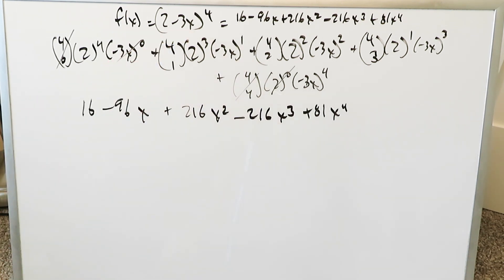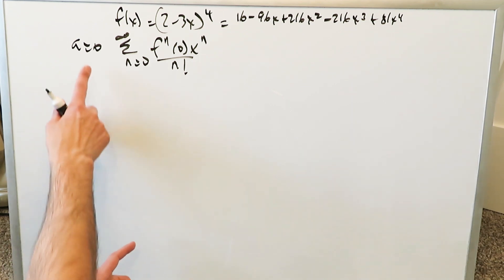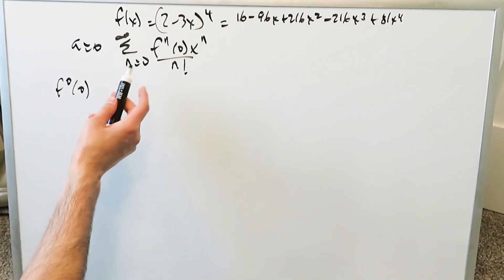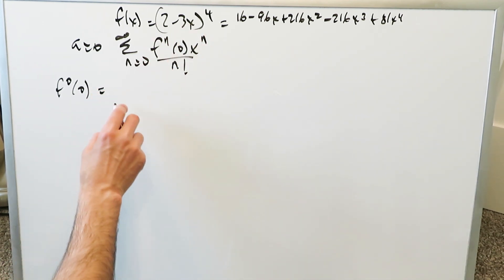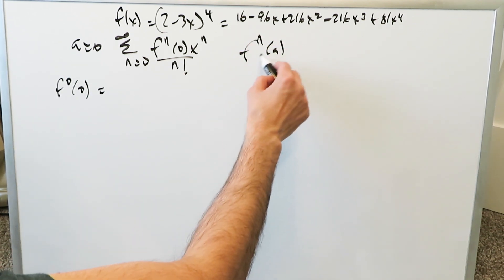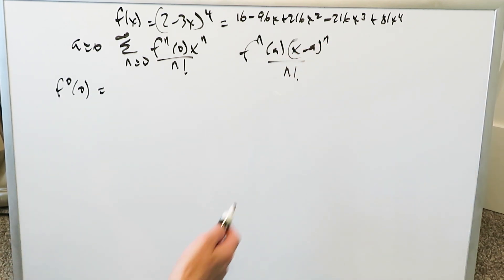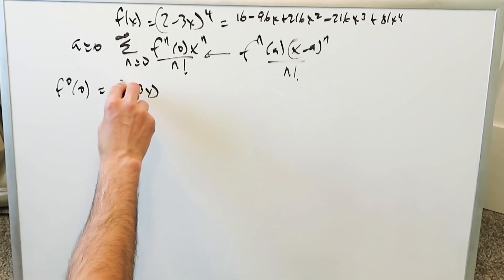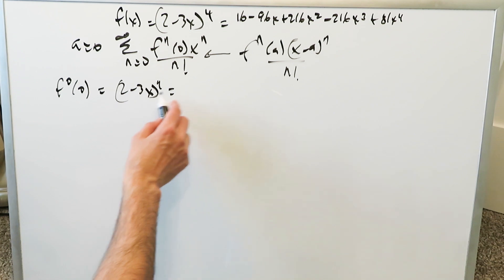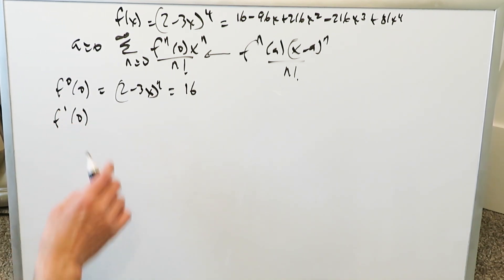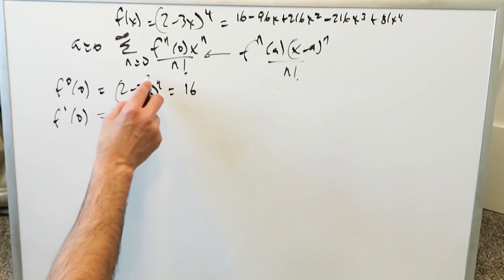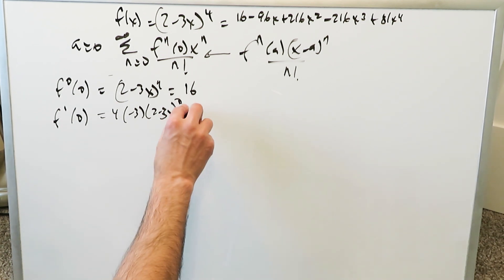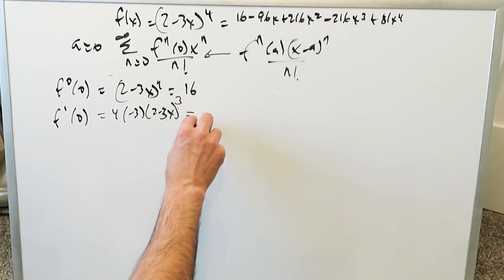The most difficult part is computing the derivatives of this composite function. We center the function around a = 0 (Maclaurin series). The zero-order derivative is the original function: putting x = 0 into (2 − 3x)^4 gives 2^4 = 16. The first-order derivative: using the power rule and chain rule gives 4 · (−3) · (2 − 3x)^3; putting x = 0 gives −12 × 8 = −96.